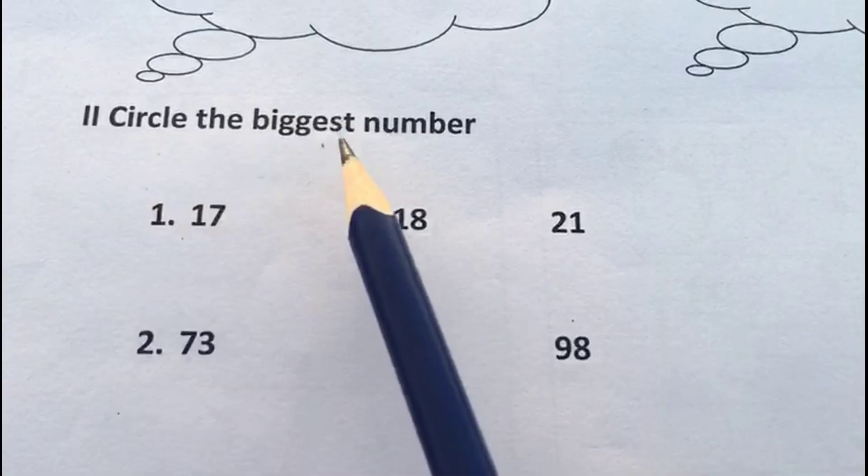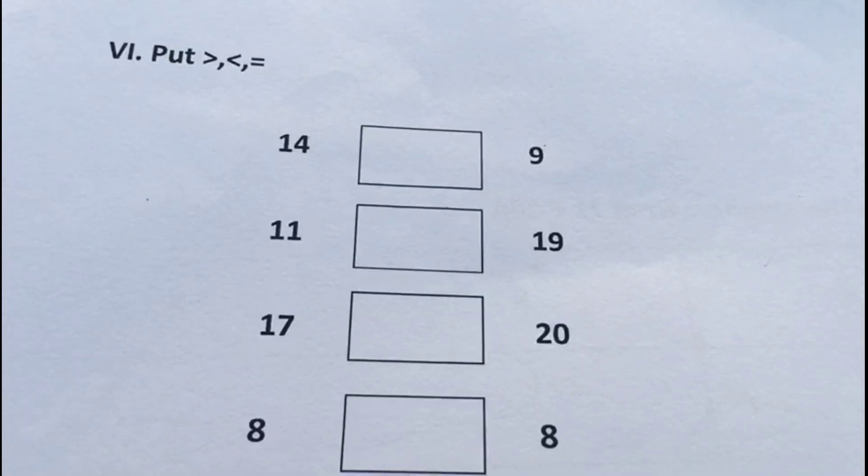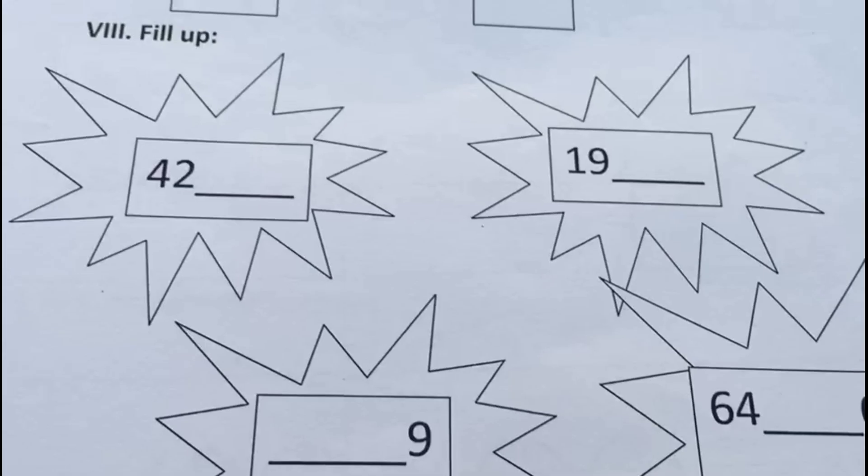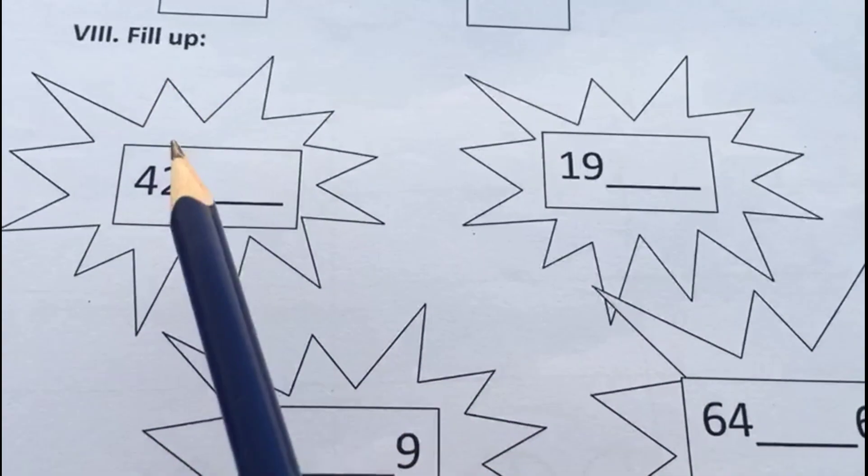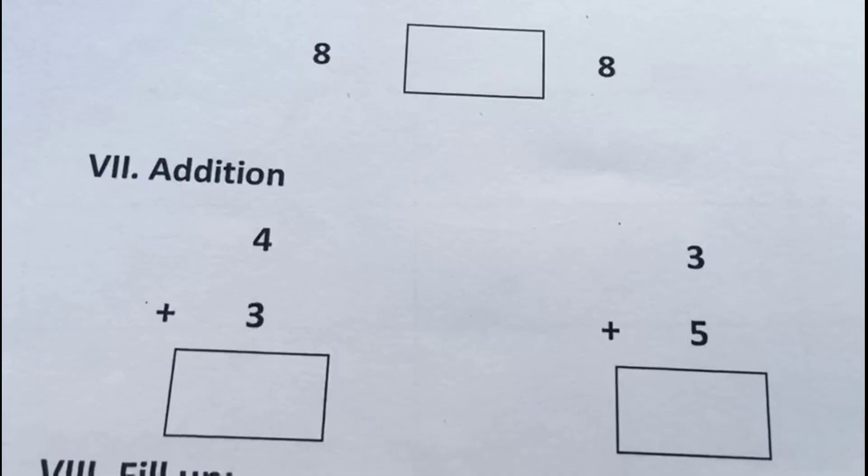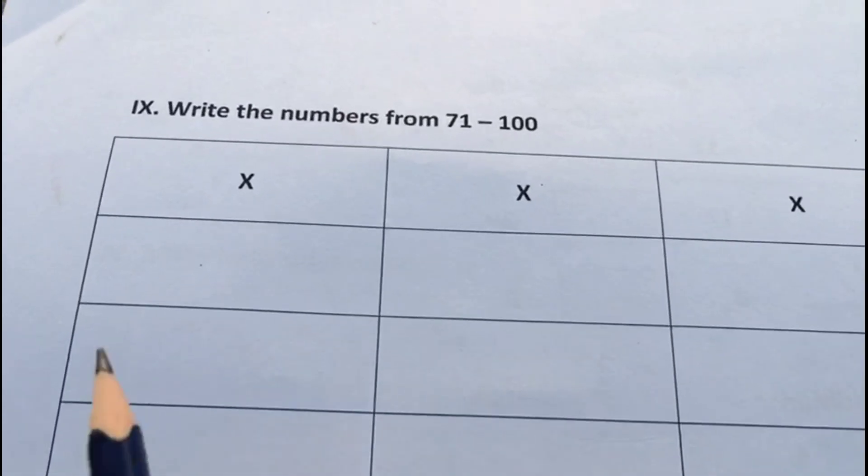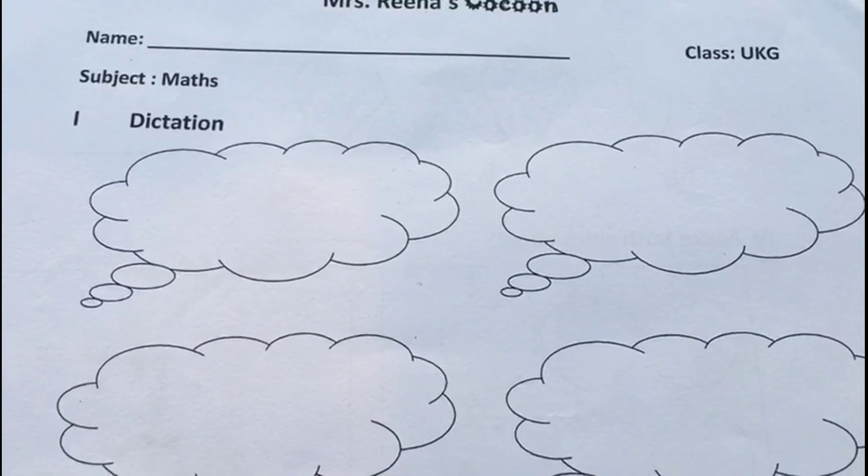What comes after, before and between, addition, as well as number writing from 71 to 100. The first question is dictation. Here we are going to ask our child to write the number.